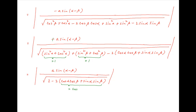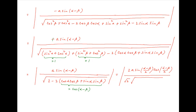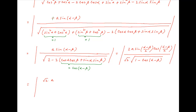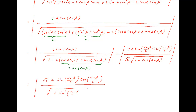In the denominator, cos α·cos β plus sin α·sin β equals cos(α minus β). Therefore this expression can be written as 2a·sin((α minus β)/2)·cos((α minus β)/2) in the numerator divided by the square root of 2 times [1 minus cos(α minus β)], which equals 2·sin²((α minus β)/2). So the expression becomes 2a·sin((α minus β)/2)·cos((α minus β)/2) divided by √[2·sin²((α minus β)/2)].